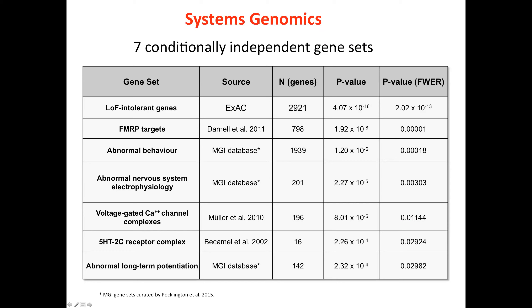The significant gene sets include MGI-database curated sets — some broad like abnormal behavior — as well as more specific ones informative for treatment development. FMRP comes out, having been implicated in previous rare variant and common variant studies. These gene sets are shown with their definitions, number of genes, p-values, and corrected p-values. I should have said at the outset — please let us know if you have any questions as we go through.